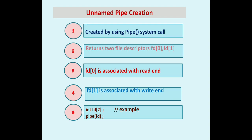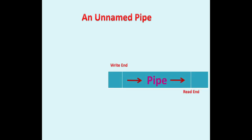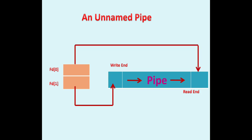Here is an example of how to create an unnamed pipe: declare 'int fd[2]' and call 'pipe(fd)'. Since it is unnamed, we cannot give any name to it — that is why it is called unnamed. One process writes to the pipe and the other reads from it. In the diagrammatic view, the pipe has a write end associated with fd[1] and a read end associated with fd[0].